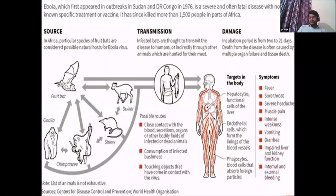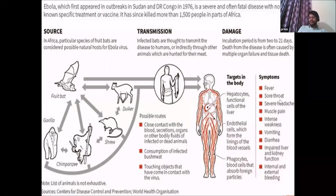Ebola virus is more deadly than many viruses because it causes internal and external bleeding, and failure in endothelial cells leads to skin bleeding. Body fluids including sweat act as transmission sources, which made Ebola very feared. It was fortunately controlled in West Africa. The incubation period is 2 to 21 days — a very long window — which made it one of the most difficult diseases to detect and contain. Bats are the natural reservoirs from which transmission to humans occurred through eating bush meat.